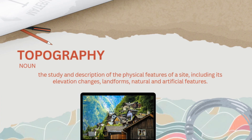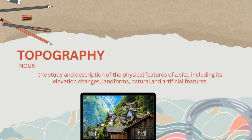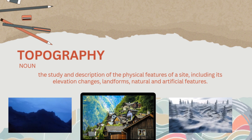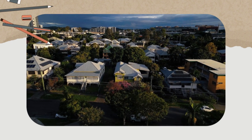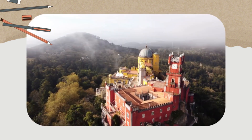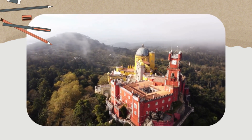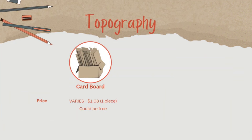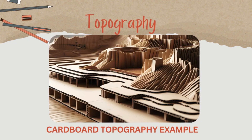Starting with topography. Topography is the study and representation of the physical features of a site, including elevation, landforms, and both natural and artificial elements. Professors often assign site models to help you understand relationships like slope, elevation, and how a building integrates into the landscape. Number one: cardboard. Hear me out — cardboard can actually look really great when cleanly cut. The corrugation adds a unique texture.